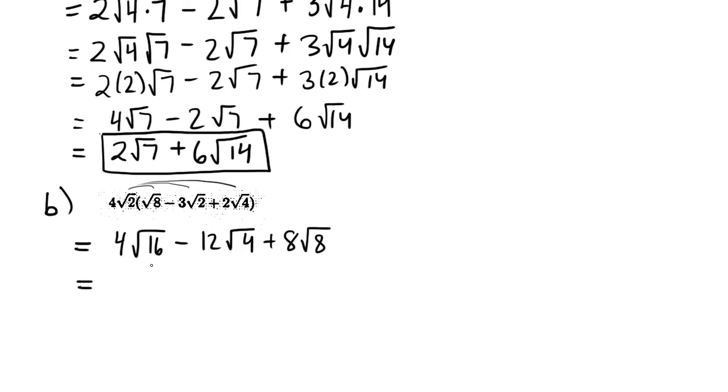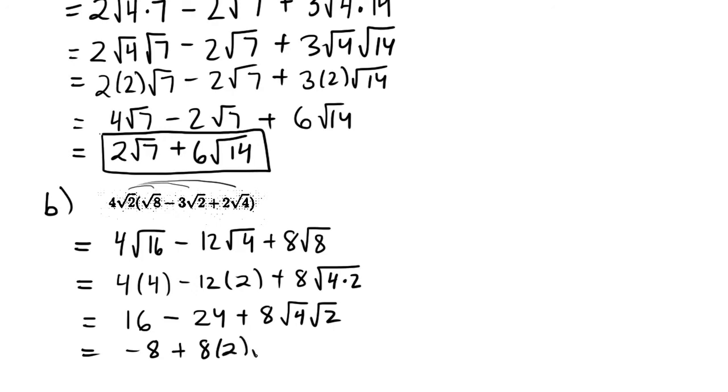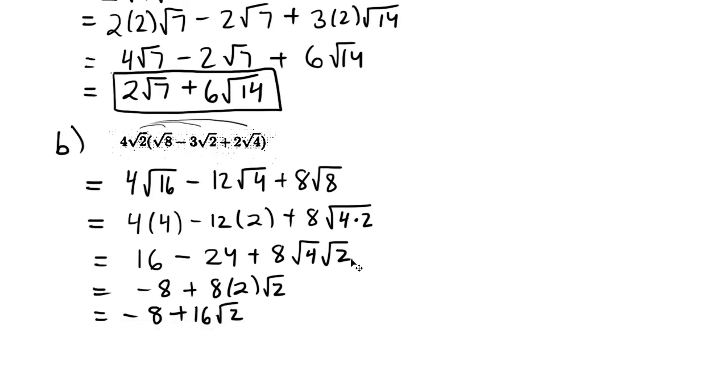Now, let's see what we got here. 4 root 16. Root 16 is actually a square number. The root of 16 is nice, it's just 4. And the root of 4 is 2. How about root 8? Root 8 is actually 4 times 2, and that's going to be good for us, because this root 4 is a nice number. So 4 times 4 is 16. This is 24. 16 minus 24, that's negative 8. And 8 stays. Root of 4 is 2, and root 2 stays. So we get negative 8 plus 16 root 2. And we can maybe write that as a little bit nicer as 16 root 2 minus 8.